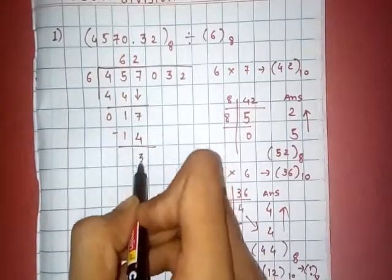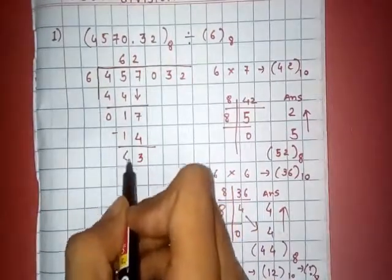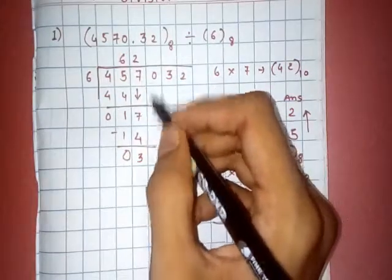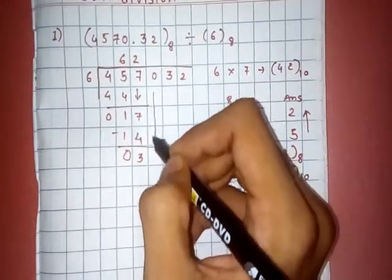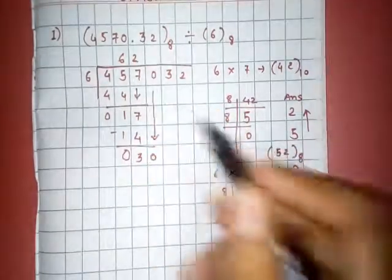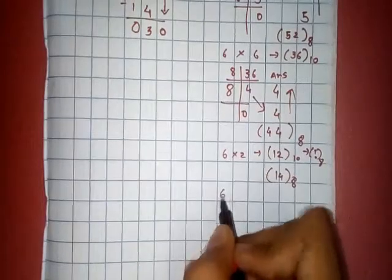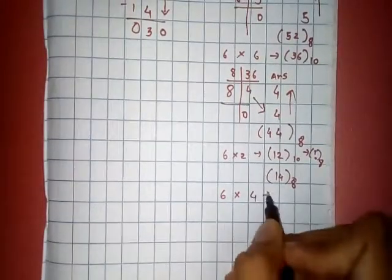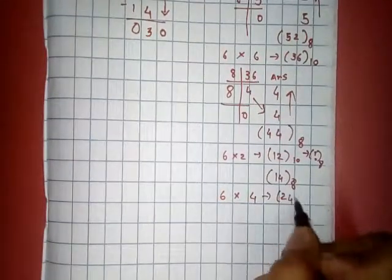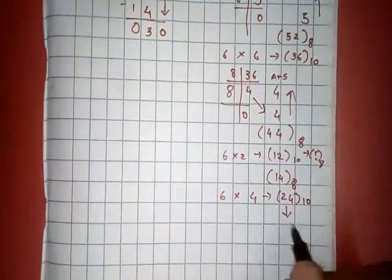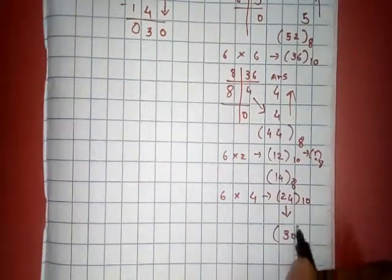Now take this 0. 6 fours are 24 in decimal. Convert this into octal and that is 30. You can verify by this method.